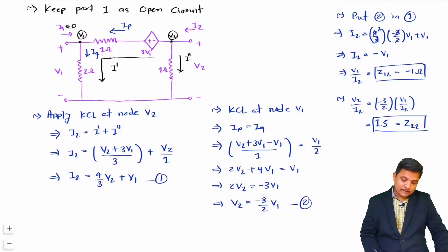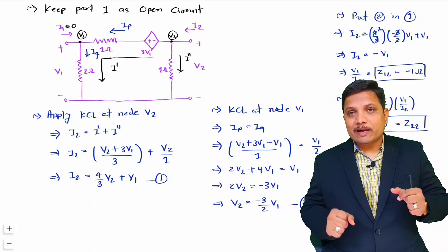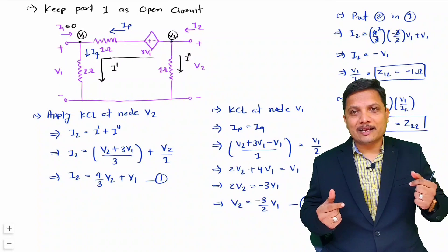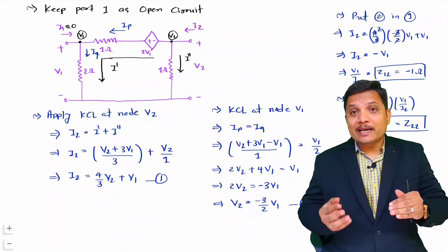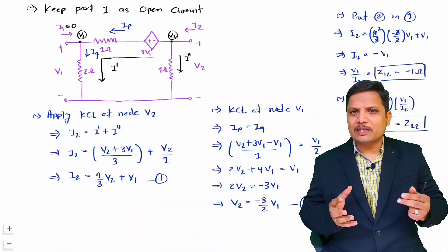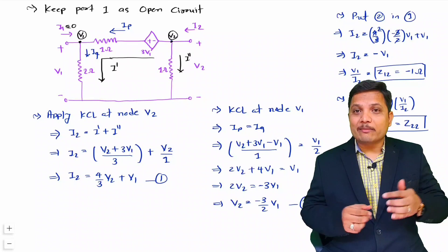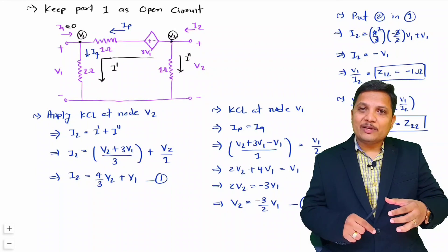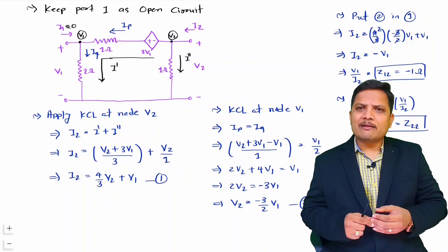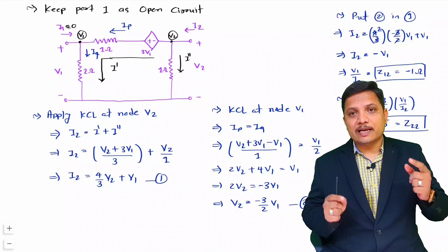That is how we calculate all four Z parameters. You need to understand how to apply KVL and KCL equations correctly, and for that you need practice. Students often make only minor mistakes — sign errors like plus to minus or minus to plus — which cause wrong answers. The purpose of this video is to understand how to apply the rules. There are many ways to solve the same question. I hope you have understood this. Thank you so much for watching.